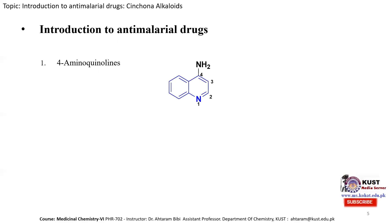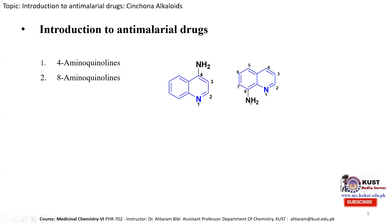The second class is 8-aminoquinoline. It consists of the basic quinoline unit with an amine group at the 8-position. It also has anti-malarial activity, and when the nitrogen is substituted with alkyl or aryl groups, we obtain derivatives with more important anti-malarial activity than the parent 8-aminoquinoline molecule.